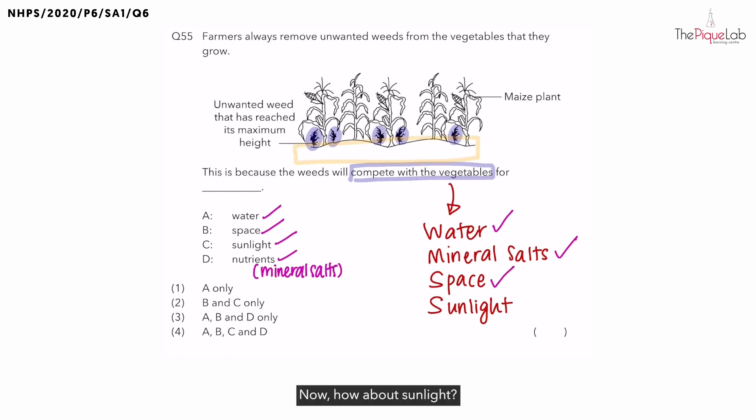Now, how about sunlight? Take a look at this part over here. It says that the unwanted weed has reached its maximum height. That means this is the maximum that the weeds can grow. Do you think the weeds being there will prevent the maize plant from receiving sunlight?